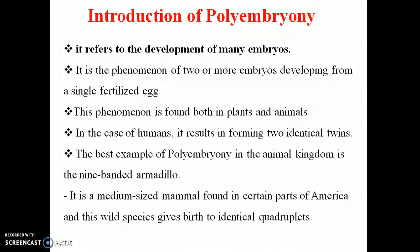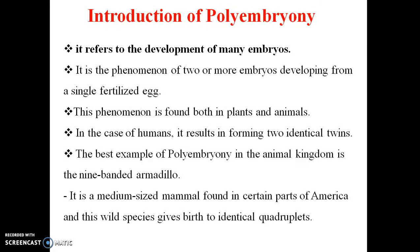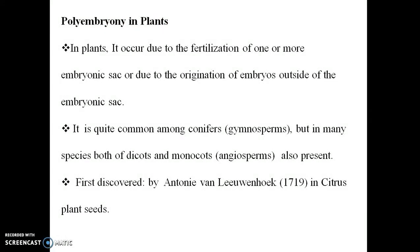In the nine-banded armadillo, which produces 4 identical offspring, this is an example from the animal kingdom. In the context of fertilization, one or more embryos can arise due to origination of embryos outside of the normal embryo. This is a common phenomenon present in many species.